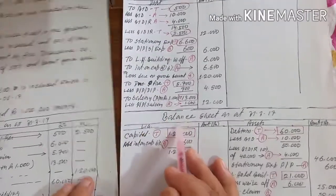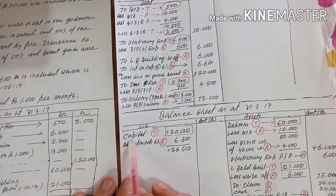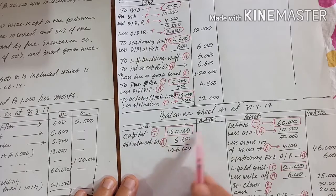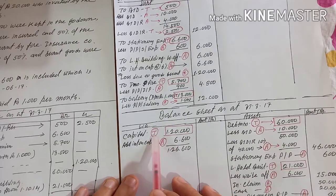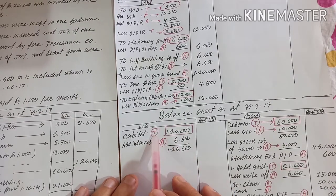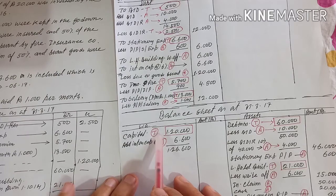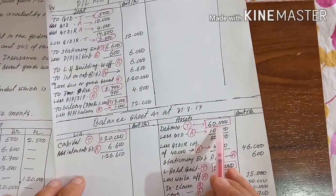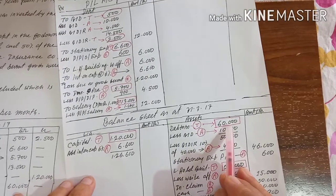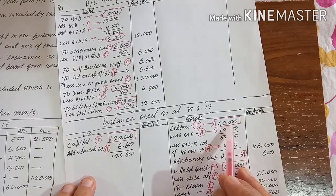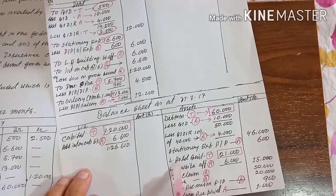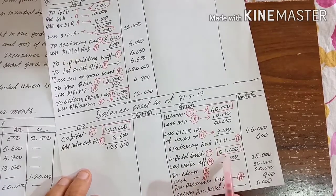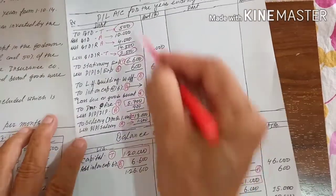Next is coming capital of 1,20,000 — that is the liability side. Capital 1,20,000, I made it a circle and wrote T, meaning it came from trial balance. Next is debtors of rupees 60,000 — assets, inner column. And next is coming leasehold building of 21,000. Seven postings we have done.